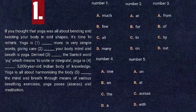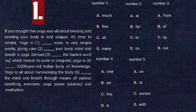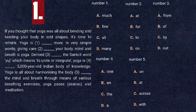For blank number five — 'yoga is all about harmonizing the body [blank] the mind and breath' — the options are: in, on, across, with. Options 'on,' 'add,' and 'across' are out of context as they don't indicate accompaniment. 'With' indicates accompaniment and is the correct option. So option D is correct: 'harmonizing the body with the mind and breath through various breathing exercises, yoga poses, and meditation.'